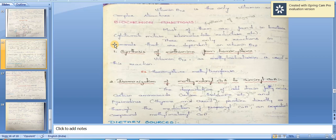Biochemical functions: most are found in bacteria, such as glutamate mutase and ribonucleotide reductase. There are only two reactions in mammals that are dependent on vitamin B12.